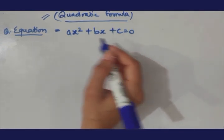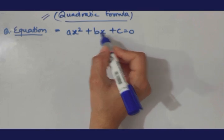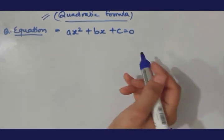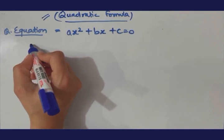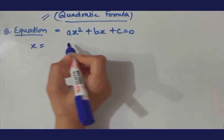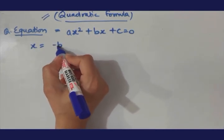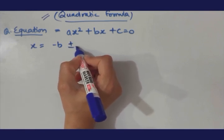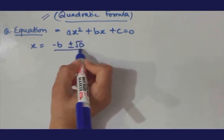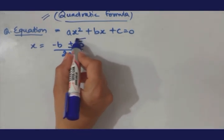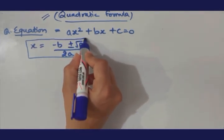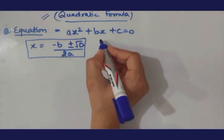Aapko pata hai a aapka coefficient of x square, b is this and c this. So quadratic formula humara main kya hoti hai jahan par hum x nikalte hai, that is by this formula minus b plus minus root D upon 2a.